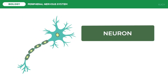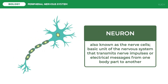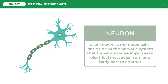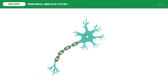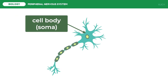Neurons, also known as the nerve cells, are the basic units of the nervous system that transmit nerve impulses or electrical messages from one body part to another. The figure shown here is the anatomy of the most common type of neuron. Let us identify its parts. A single neuron typically consists of two general parts: the cell body and the neural processes.